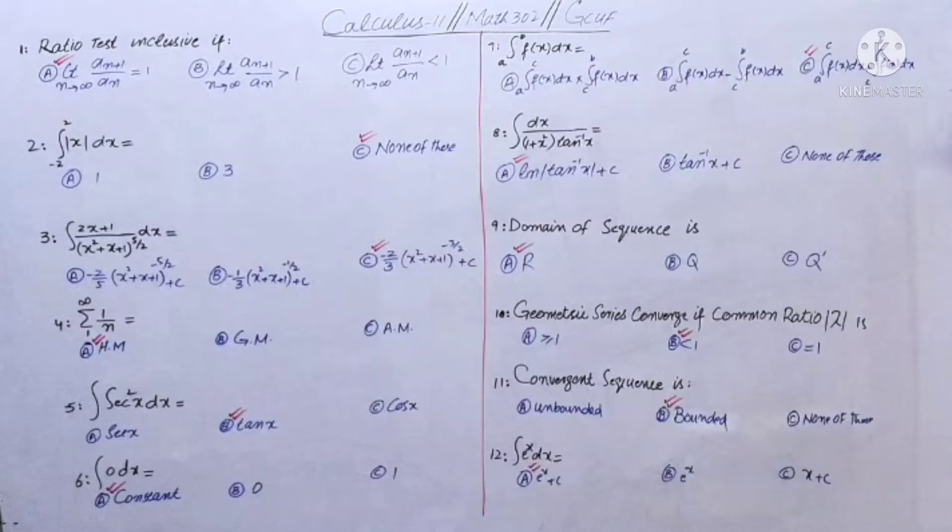We will study the ratio test article. It will be equal to 1. So, right answer is equal to limit n approaches to infinity a_n+1 over a_n equal to 1.